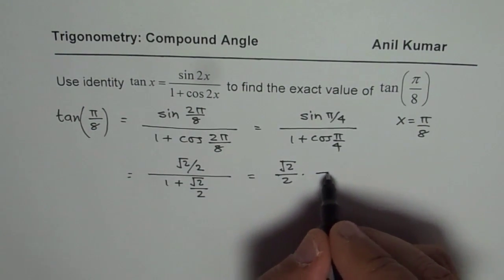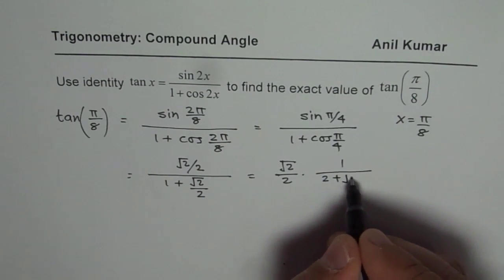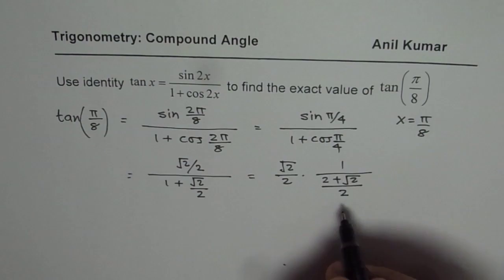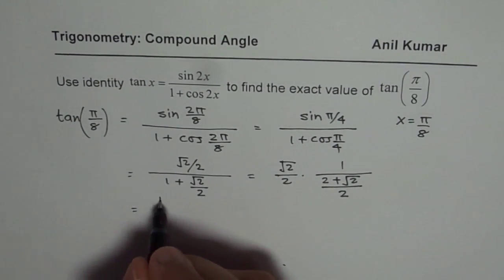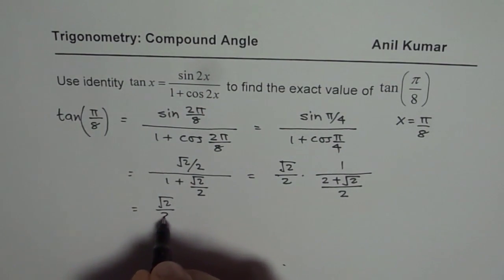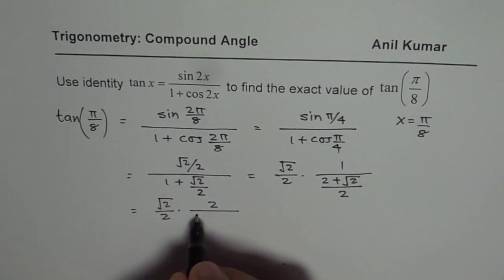And in this case, we can say 1 over, we take common denominator, 2 plus square root 2 over 2. I'm just using a few different ways of solving the same equation. So now we'll do square root 2 over 2 times, we can flip this. So we get 2 over 2 plus square root 2.